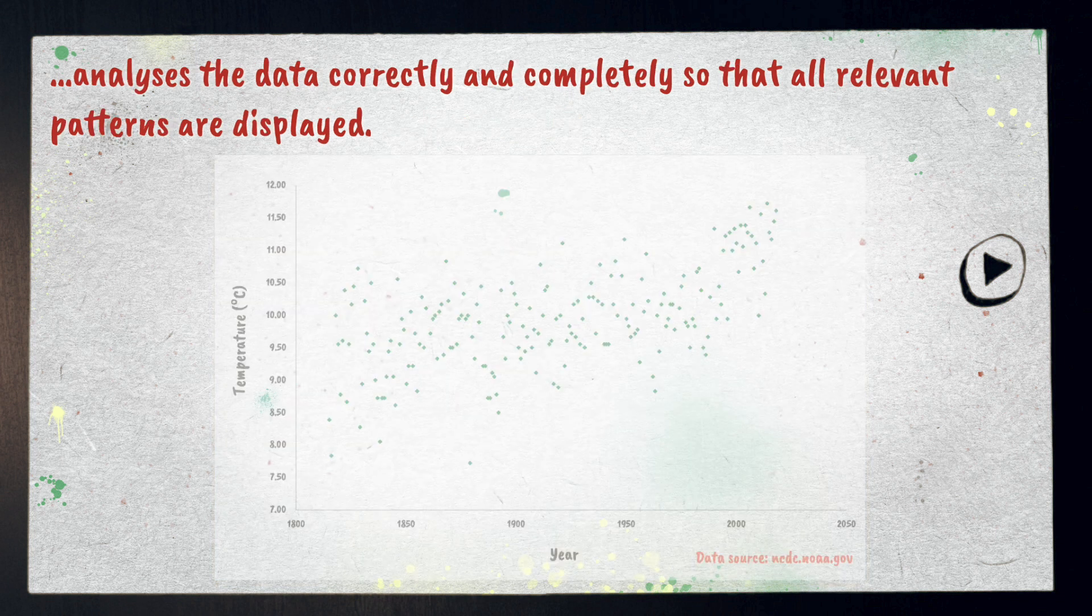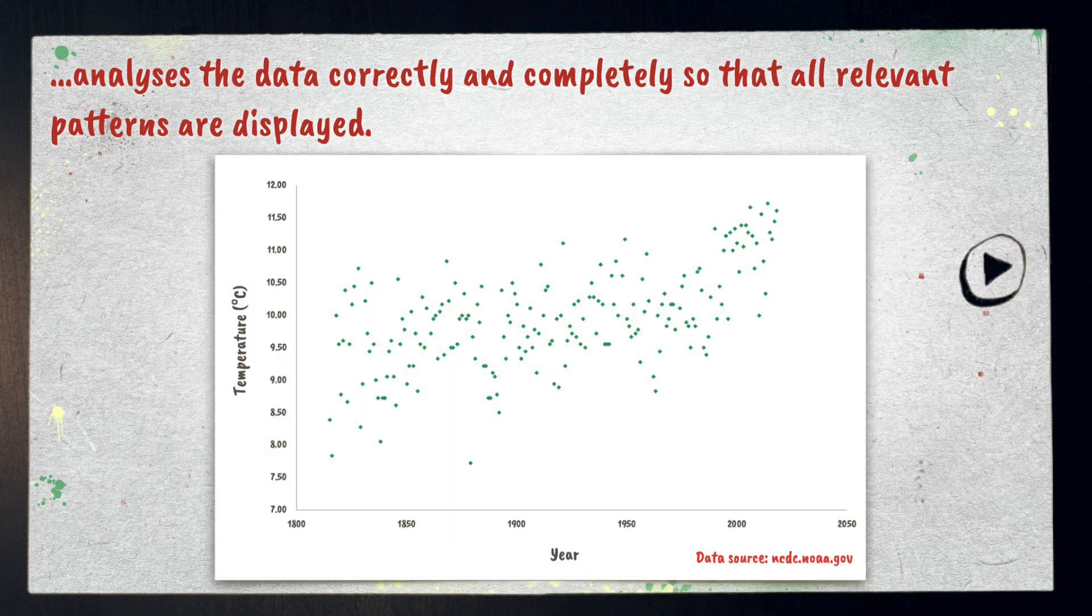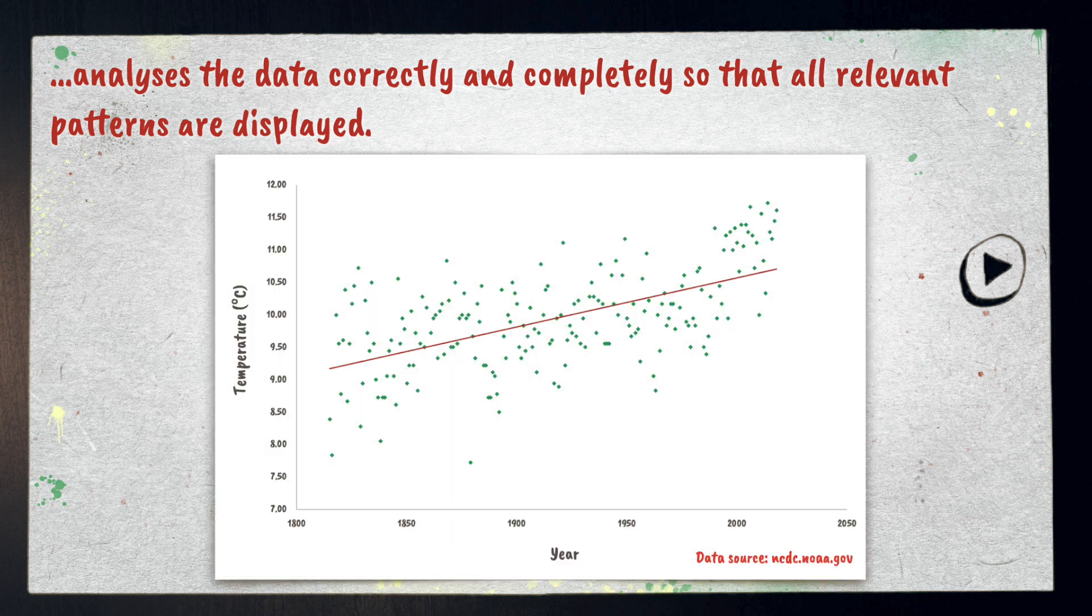The analysis involves finding patterns in the data. A good example of analysis of data is to add a trend line on your graph to show a correlation. So some of your analysis will be evident within your results section because the pattern is identified on your graph.